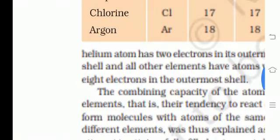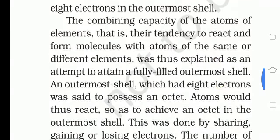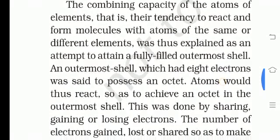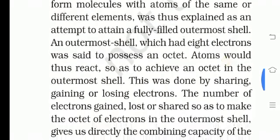Of the inert elements, helium has 2 electrons in its outermost shell and all other elements have 8 electrons in the outermost shell. The combining capacity of an atom — its tendency to react and form molecules with atoms of the same or different elements — was explained as an attempt to attain a fully filled outermost shell. Valence batata hai ki woh kaise react karta hai, kaise molecule form karta hai, jis se uski outermost shell fulfill ho jaye.